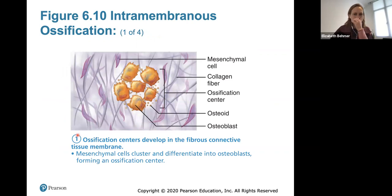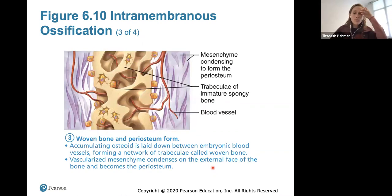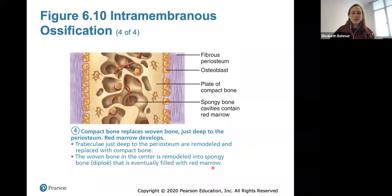In intramembranous ossification, ossification centers develop in fibrous connective tissue. Mesenchymal cells from the embryo cluster and differentiate into osteoblasts, forming an ossification center. The osteoid — the bone matrix — is secreted and calcifies. Osteoblasts continue to secrete osteoid, which calcifies in a few days, and trapped osteoblasts become osteocytes. Woven bone and periosteum then form, with trabeculae accumulating. The vascularized mesenchyme condenses on the external face to become the periosteum, compact bone replaces woven bone, and red marrow develops.